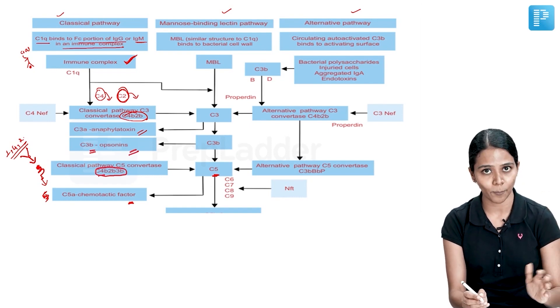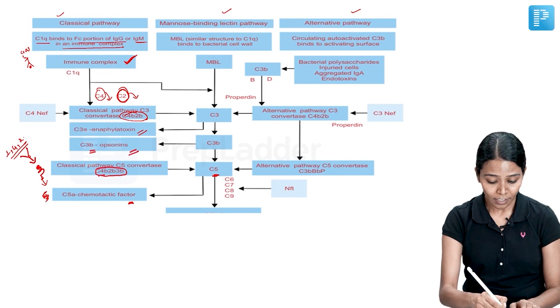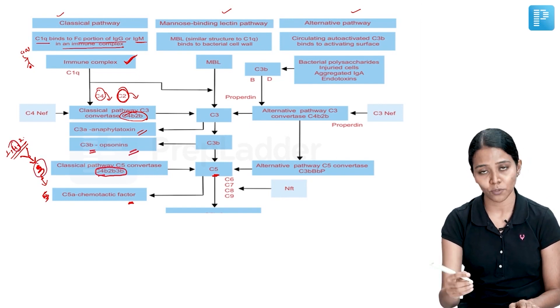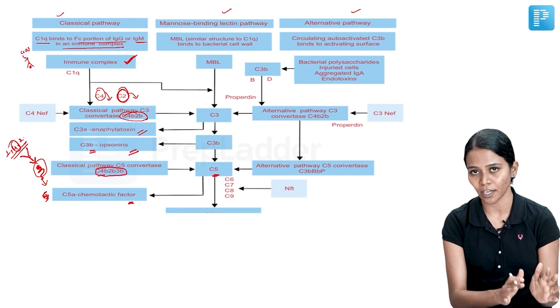So in a classical complement pathway, when you are checking, C3 is also going to be reduced, C4 is also going to be reduced. So this is about classical pathway.